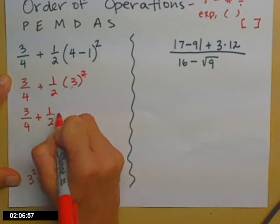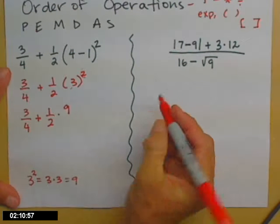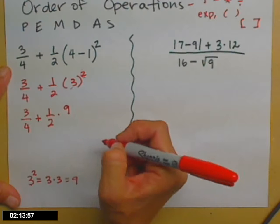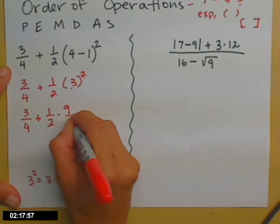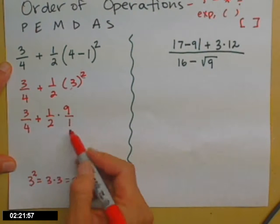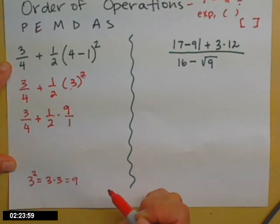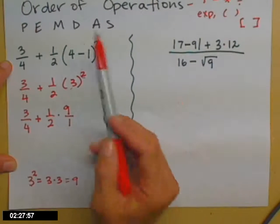So now I'm going to get rid of the parentheses. You can leave them if you want. But I'm going to write it just as 1/2 times 9. Again, if you want, you can stick a 1 under that 9 so you make sure that the 9 stays on top and doesn't try to sneak down there on the bottom. So I did my parentheses, I had an exponent, I did that.